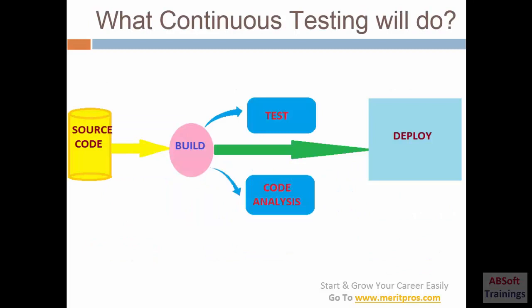So to do those, we need continuous testing. What continuous testing will do is build our code, test that code using some testing tools, and then deploy that code into the respective server — either QA, production, or UAT.